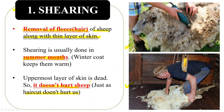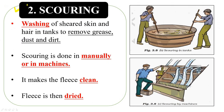The first step in processing of wool is shearing. After shearing, the second step is scouring. Scouring is washing of the sheared skin and hair in tanks to remove grease, dust, and dirt. Scouring is done manually or in machines — on a smaller scale manually, but on larger scales in machines. After scouring, the fleece is clean and is dried. Then the next step is sorting.